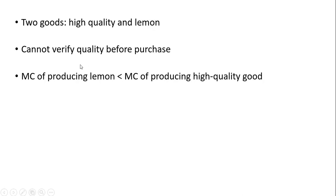We're going to assume that consumers cannot verify the quality of the good before purchase. So a high quality good will look just like a low quality good or a lemon. We will also assume that the marginal cost of producing a lemon is less than the marginal cost of producing a high quality good.